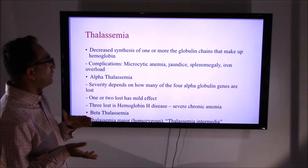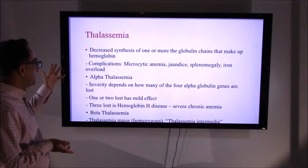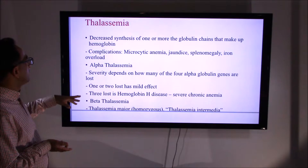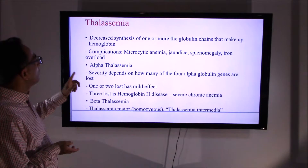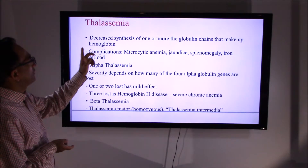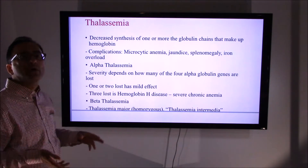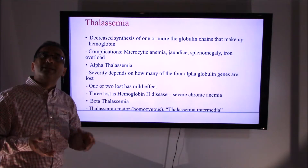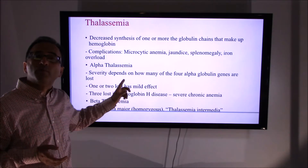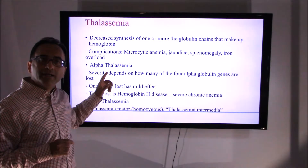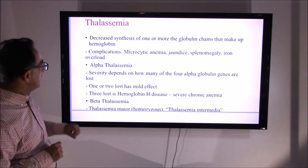Thalassemia is another important subject to understand. The severity can vary, and it can be classified as alpha or beta thalassemia. Look for complications and assess the severity category based on details in the medical records. This will also be covered in a separate presentation focused specifically on hematological conditions.